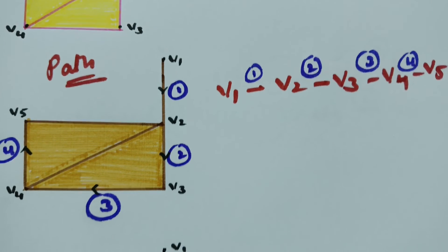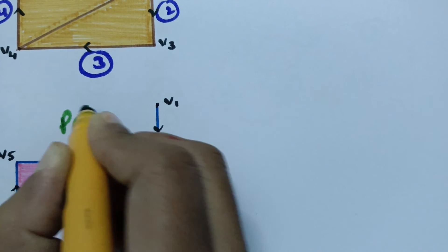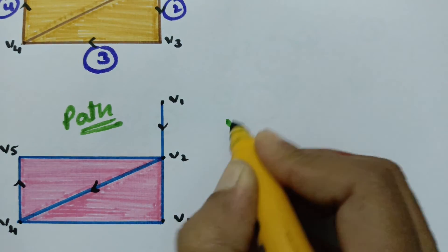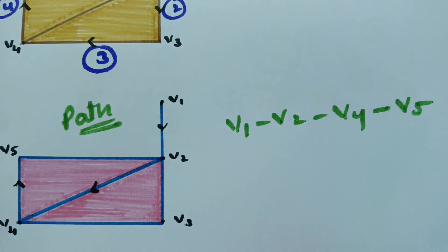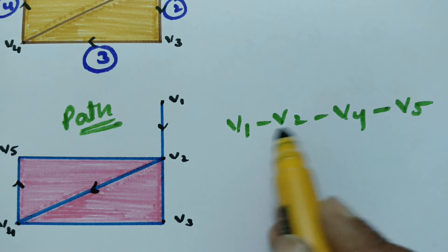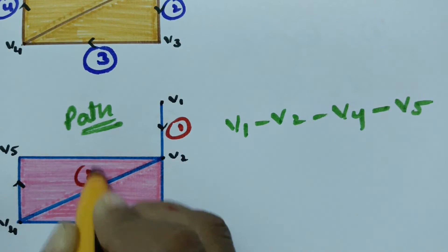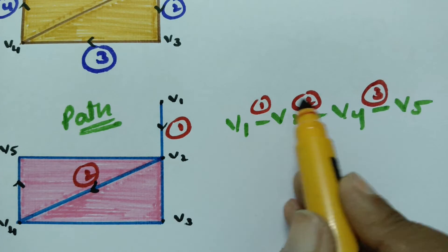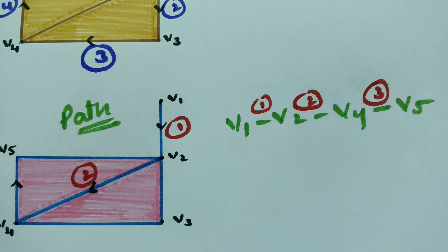Taking another path example: V1 to V2, then to V4, crossing V5 — four different distinct vertices and three distinct edges. If you observe, they are different edges and distinct vertices. If there is no repetition in the edges as well as vertices, such a kind of walk is called a path.